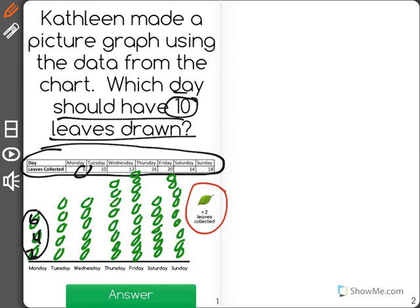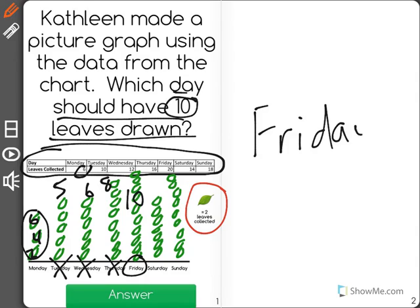Well if I look carefully, Tuesday has five leaves drawn, that's not right. Wednesday has six, that's not right. Thursday has eight. Friday is the one that has ten. Friday is the correct answer.